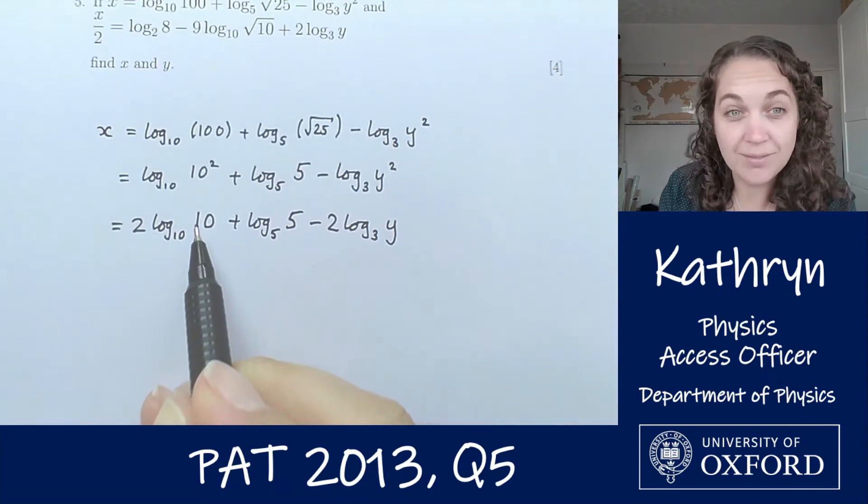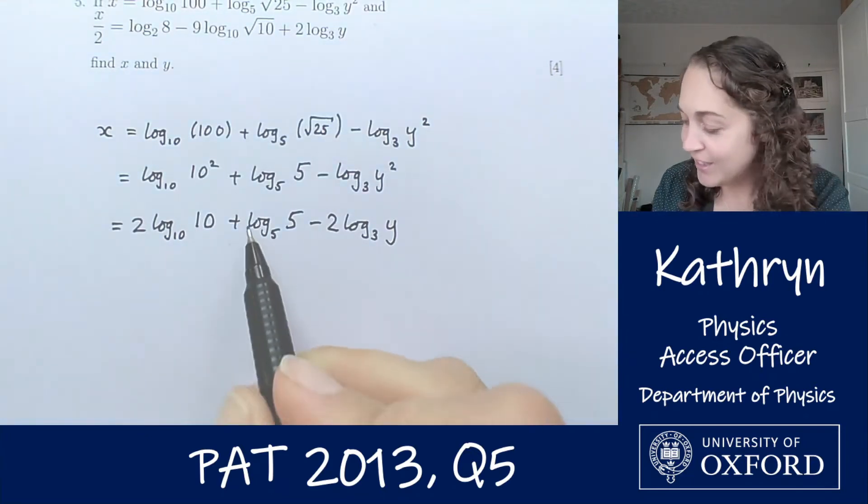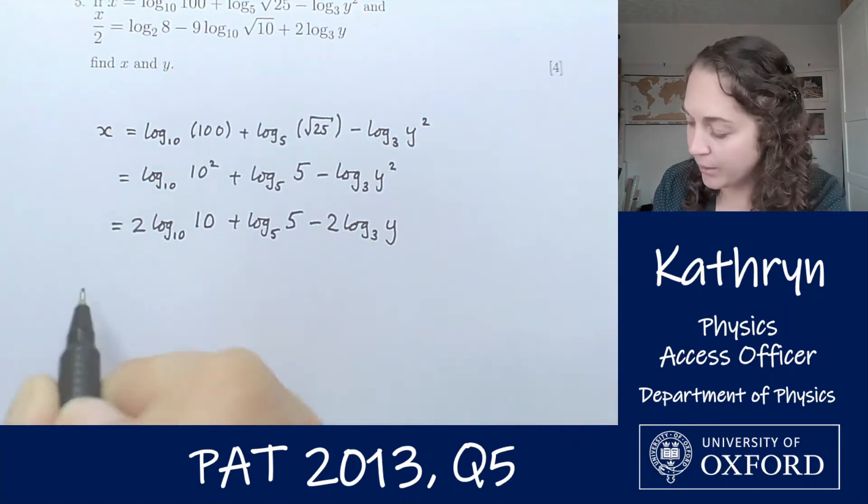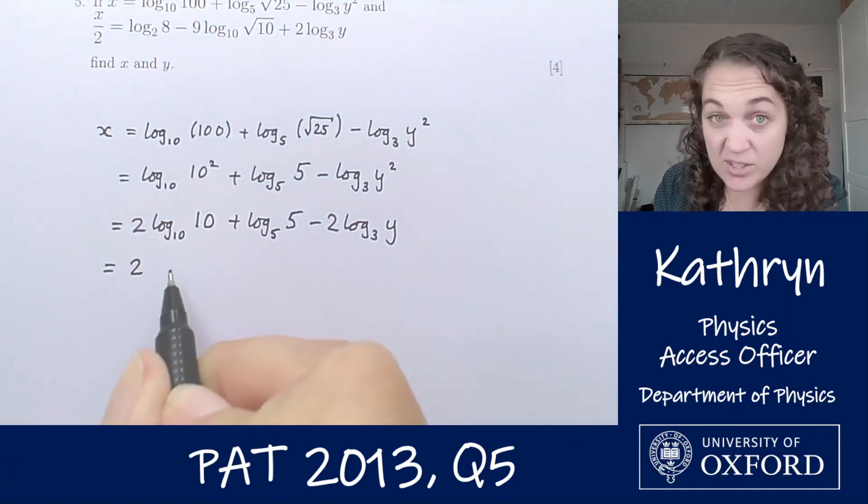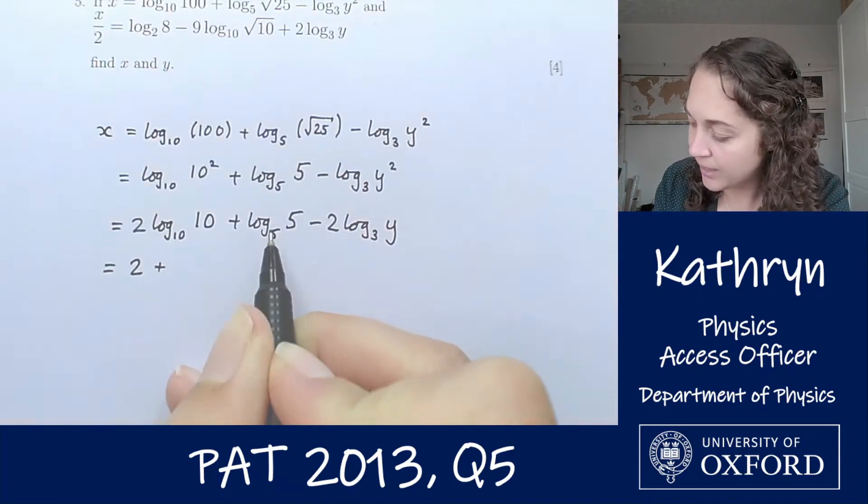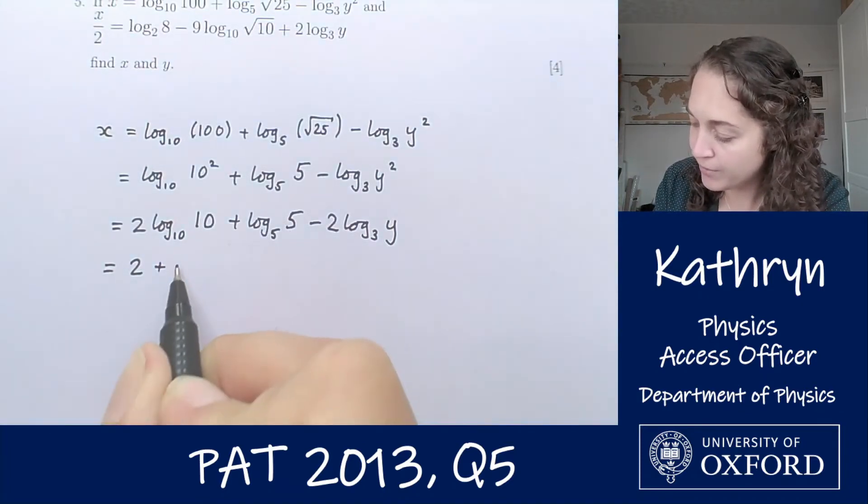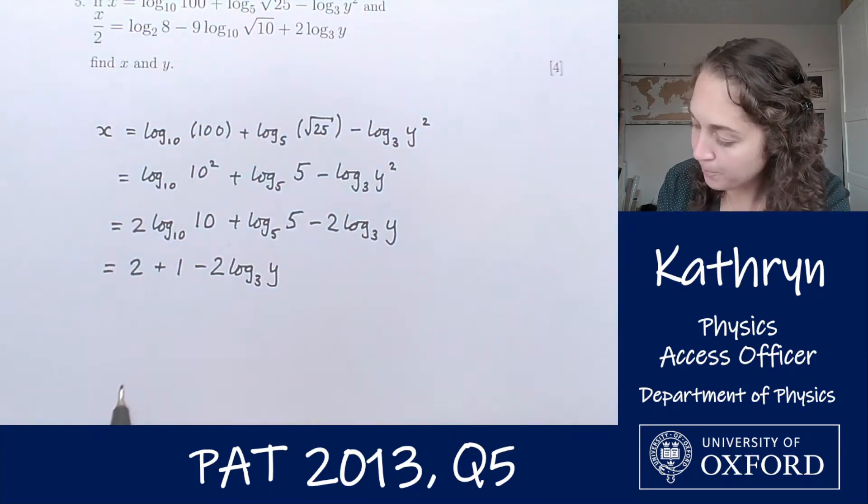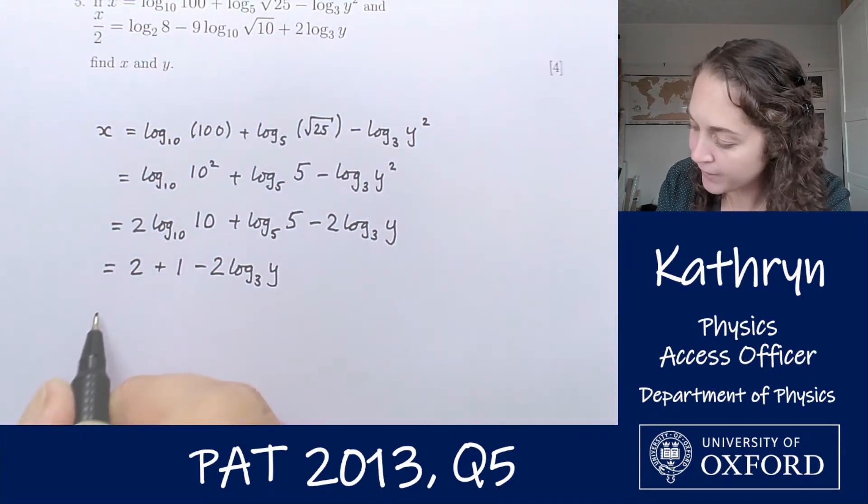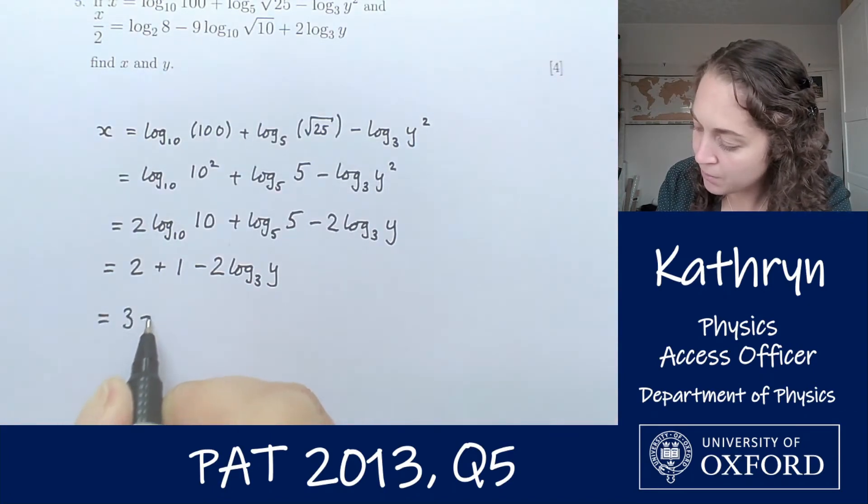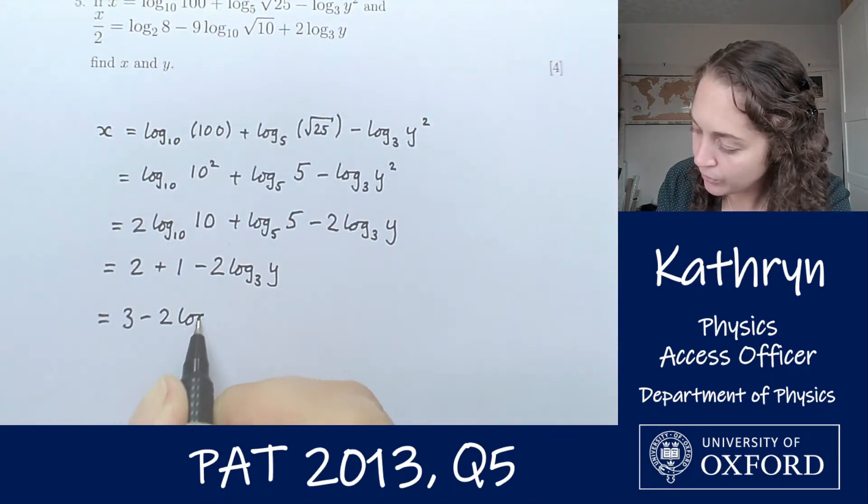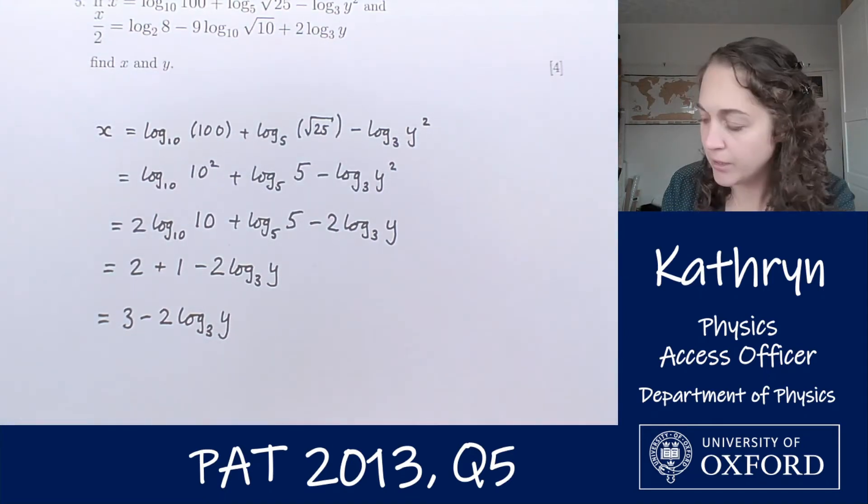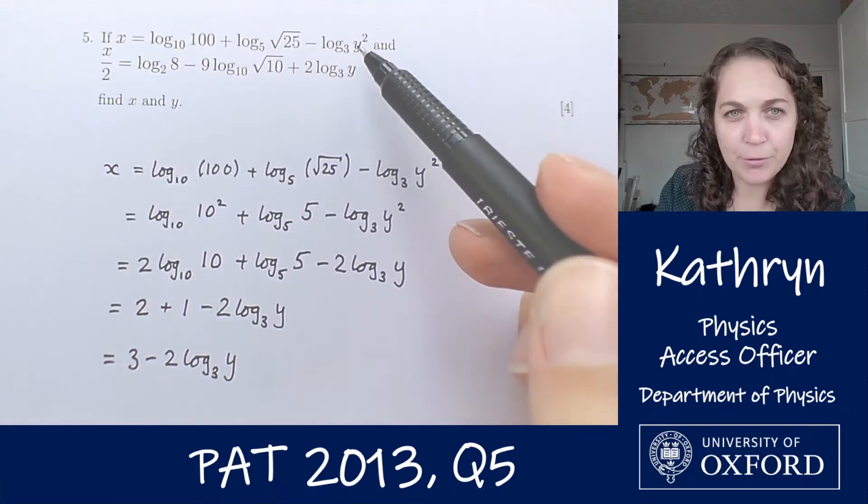Log base 10 of 10 is 1, that's our definition of a log. Log base 5 of 5 is also 1. So we've got 2 times 1 is just 2 plus 1 minus 2 log base 3 of y. That finally gives us that x equals 3 minus 2 log base 3 of y, which looks a whole lot easier to handle.